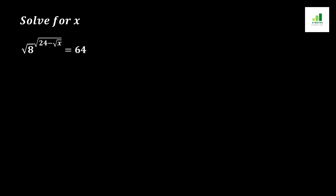Welcome to AMS. Today in this video we are going to solve the equation: the square root of 8 raised to the power (√24 − √x) equals 64. We have two ways to solve this question. The first is to apply squaring on both sides of the equation, but this gives a complicated solution, so here we apply the simpler method.